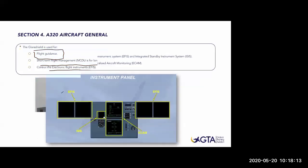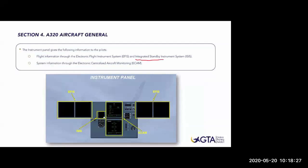The instrument panel - the front panel - is where we look during most of the flight. It shows flight information through the electronic flight instruments, EFIS, and the integrated standby instrument system, ICES. The ICES is fitted in modern aircraft; in previous Airbus versions we had analogue standby instruments - a standby horizon and airspeed indicator. In modern aircraft these have been modernized to digital, and the name is ICES - Integrated Standby Instrument System.